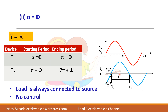The conduction angle gamma in this case equals 180 degrees (pi plus alpha minus alpha = pi). When alpha is greater than phi, gamma is less than 180 degrees, but when alpha equals phi, gamma is always 180 degrees. With a conduction angle of 180 degrees, the load is permanently connected to the source and there is no output voltage control.